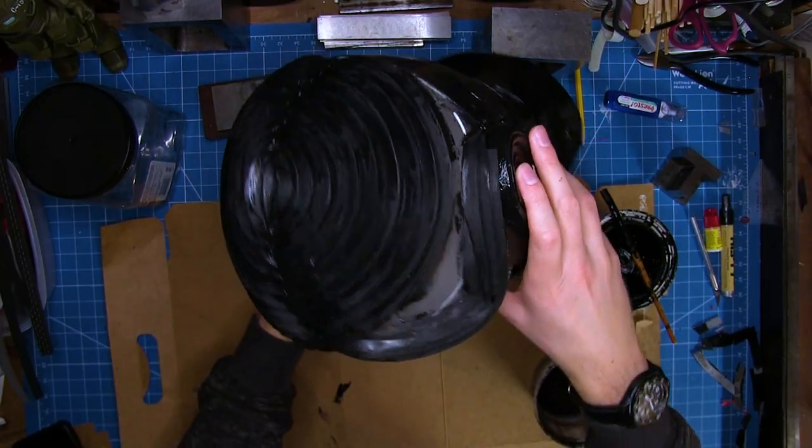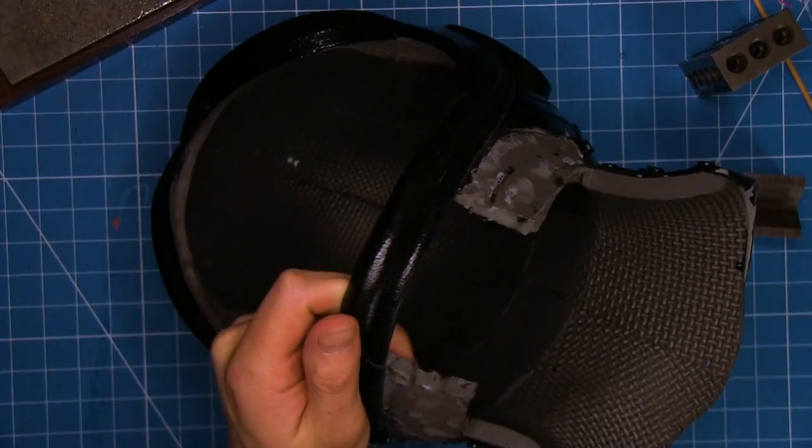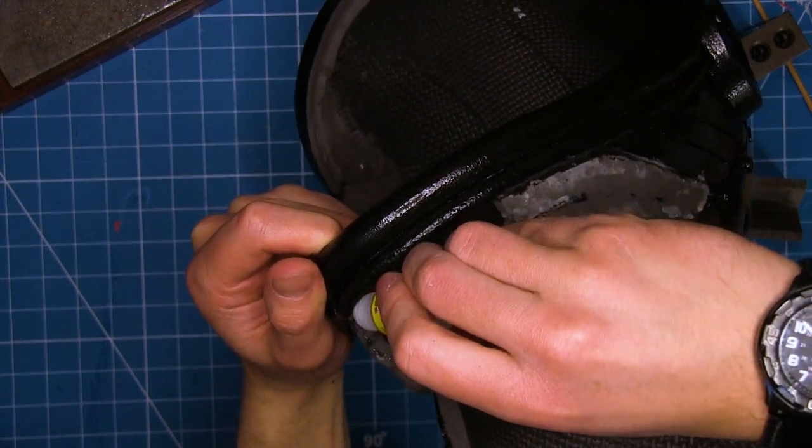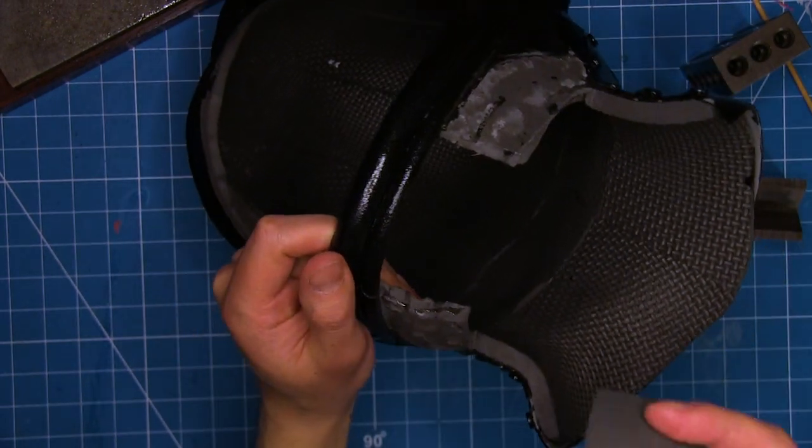I polished those off with putty and a little bit of sanding and then gave it five more coats until at last it was the level of shininess that worked for me.